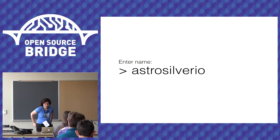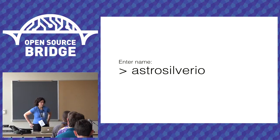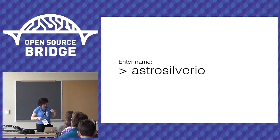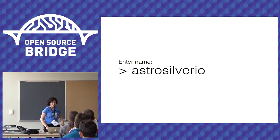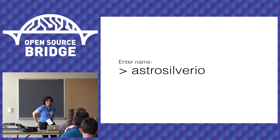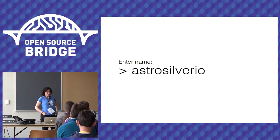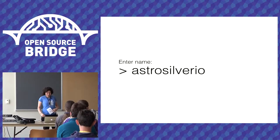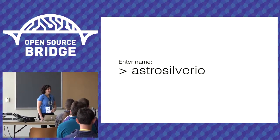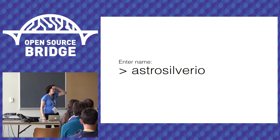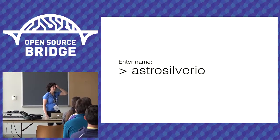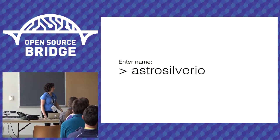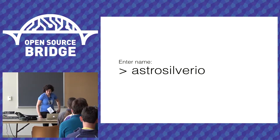Hi, I'm Katie. I'm a software engineer at Venmo in New York. I'm a Recurse Center alum from fall 2013. This is me on all the things: GitHub, Twitter, my technical blog, which is on Tumblr for some reason.